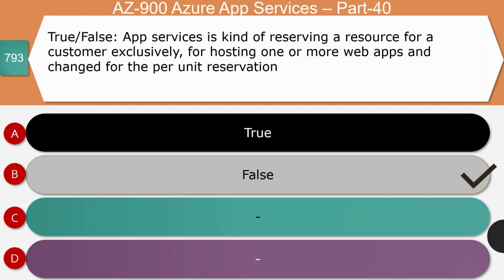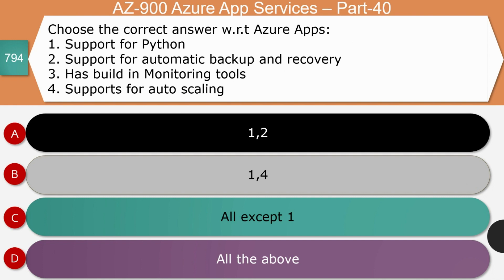Next question — choose the correct answer for Azure App Services: it supports Python, it supports automatic backup and recovery, it has built-in monitoring tools, and it supports auto-scaling. The right answer is all of the above. Azure App Service supports multiple programming languages including .NET, .NET Core, Python, and Java. It supports backup and recovery, load balancing, built-in monitoring tools to track application performance, and auto-scaling based on load.